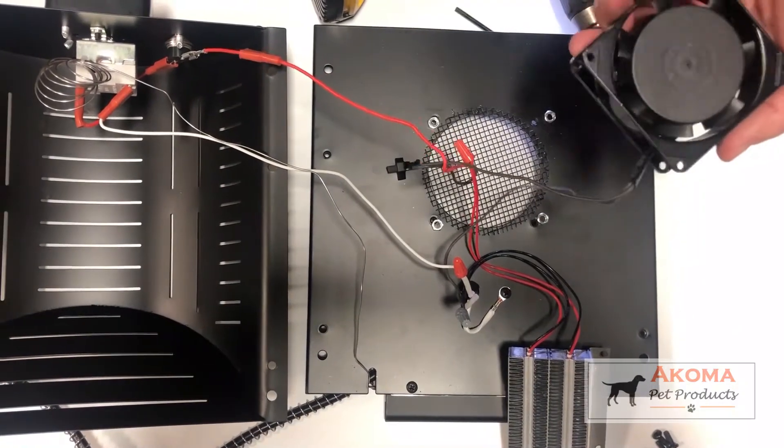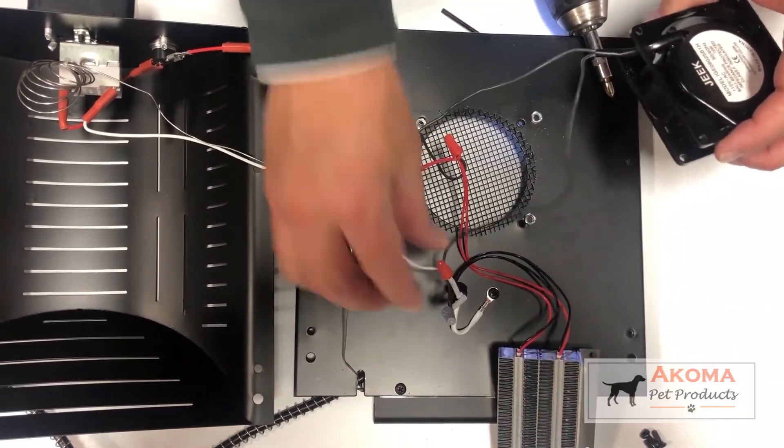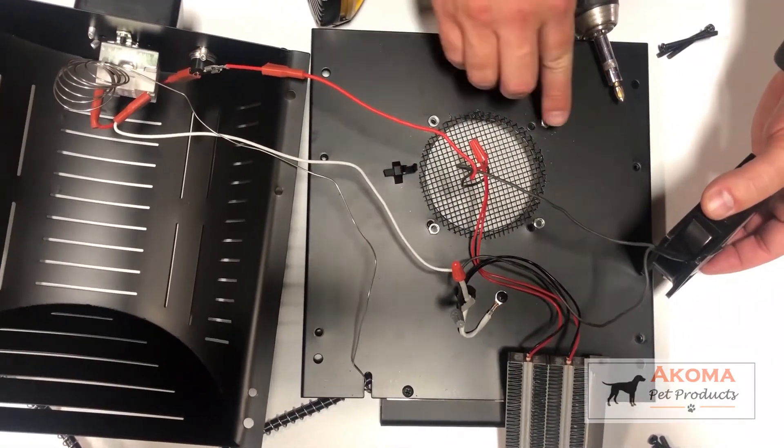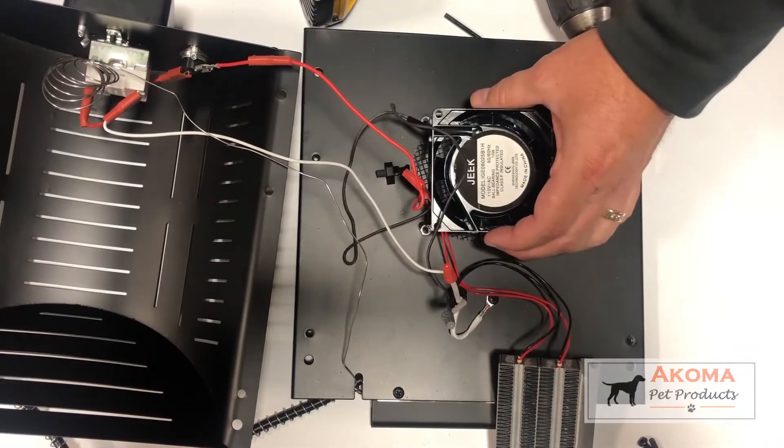And then you can just take the fan, unattach it from this screw, unattach it from this screw, put the other fan down. It does have these little spacers here you would put in. Just make sure that they line back up. You just put your new fan in, and you'd be ready to go.